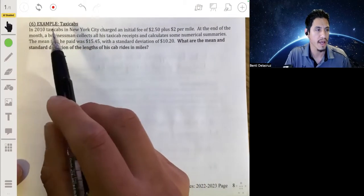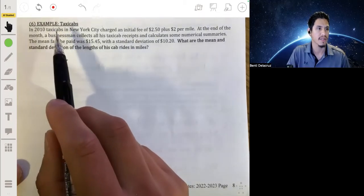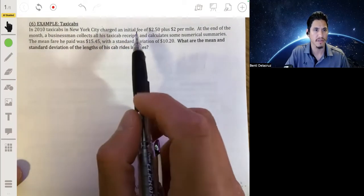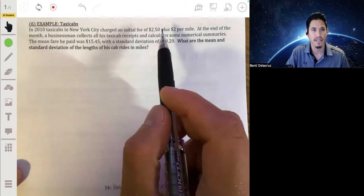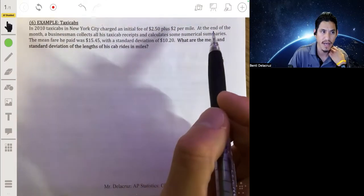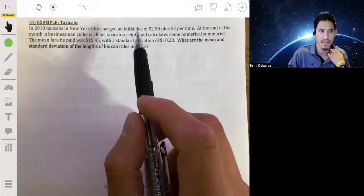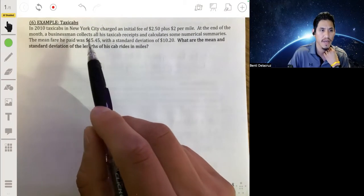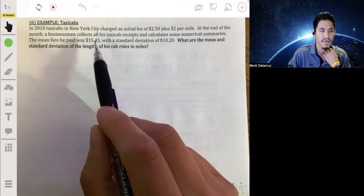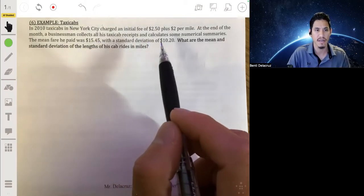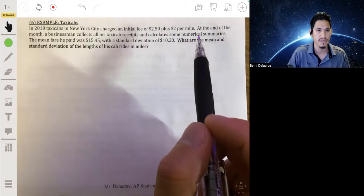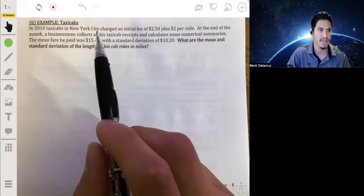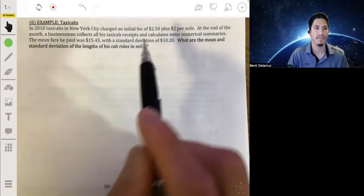So here in this example, we have that in 2010, taxicabs in New York City charged an initial fee of $2.50 plus $2 per mile. So at the end of the month, a businessman collected all of his taxicab receipts and calculated numerical summaries. The mean fare he paid was found to be $15.45 and had a standard deviation of $10.20. So the question is, what are the mean and standard deviation of the length of his cab rides in miles?